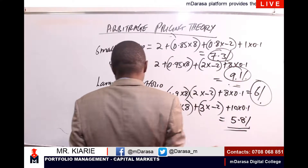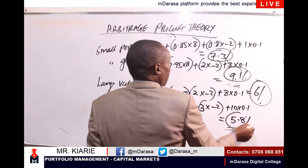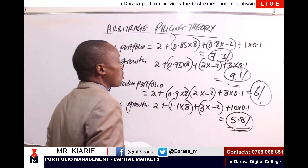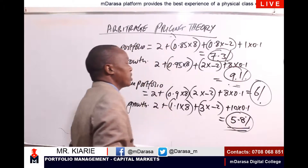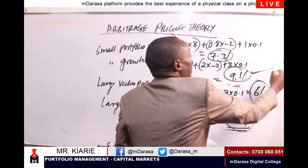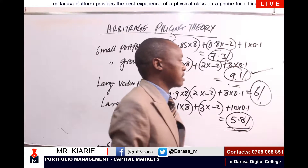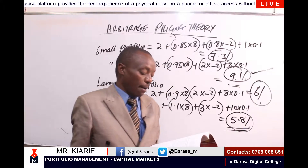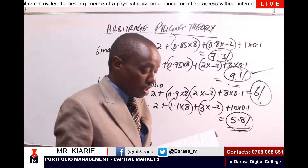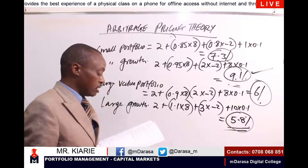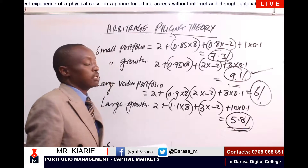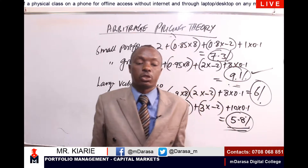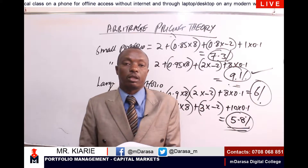Therefore, you compare these four values and identify the one with the highest expected return — in this case it is the small growth investment which has an expected return of 9.1%. Ladies and gentlemen, that's how you apply the APT model to ascertain the expected value of a portfolio. Let's have a short break and then we proceed on. Thank you.